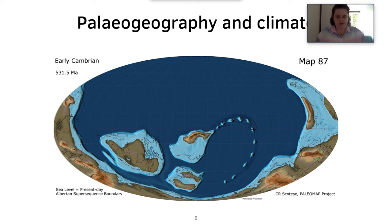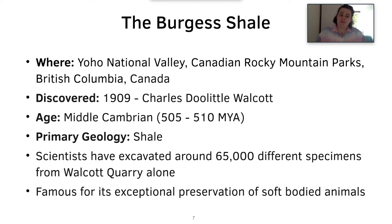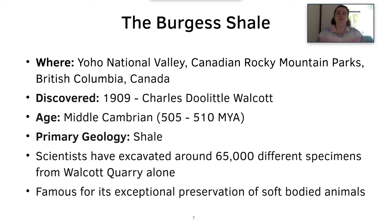We are now going on to the Burgess Shale. The Burgess Shale is a really famous locality for the Cambrian explosion — every paleontologist has heard about it. It's in the Yoho National Valley in the Canadian Rocky Mountains in British Columbia, Canada. It was discovered in 1909 by Charles Doolittle Walcott, an American paleontologist, geologist, and administrator for the Smithsonian Institute. There are two tales of how Walcott found the fossils. The first was that his wife's horse slipped, overturning a rock that Walcott then hit with a hammer, split in half, and found some really well-preserved specimens.